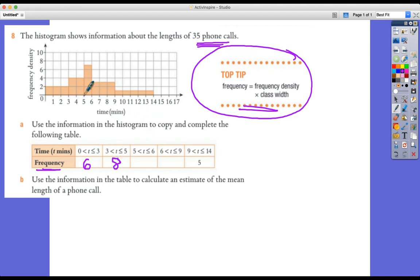In the next one, we've got 1 unit in terms of its class width and its height here is 7. So 1 multiplied by 7 gives us an area of 7.